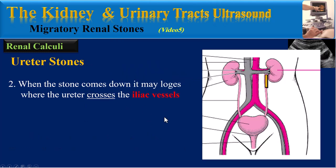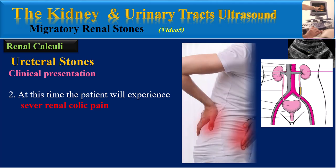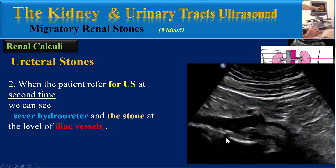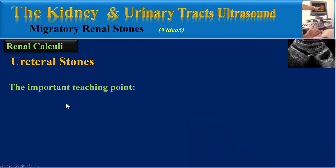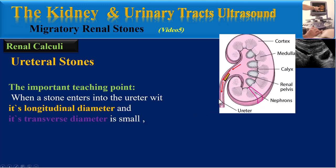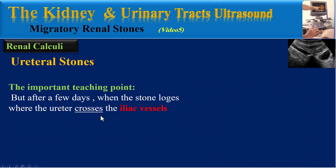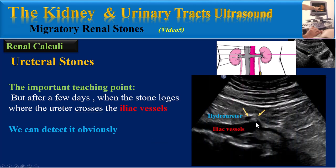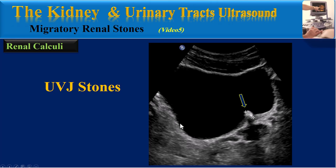When the stone comes down, it may lodge where the ureter crosses the iliac vessels. At this time the patient will experience severe renal colic pain. When the patient presents for ultrasound the second time, we can see severe hydroureter and the stone at the level of the iliac vessels. The important teaching point is: when a stone enters the ureter with its longitudinal diameter and its transverse diameter is small, it may be missed by sonography initially, but after a few days when it lodges at the iliac vessel crossing we can detect it clearly.